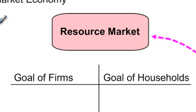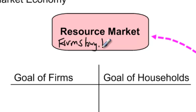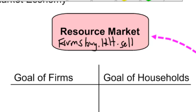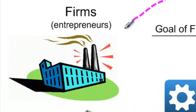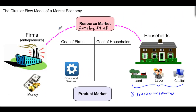The resource market is where the entire circular flow begins. Firms are the buyers in the resource market — firms buy resources and households sell resources. The resources being bought and sold are land, labor, and capital. In the circular flow, resources flow from households to the resource market to firms, where they are employed in the production of goods and services.